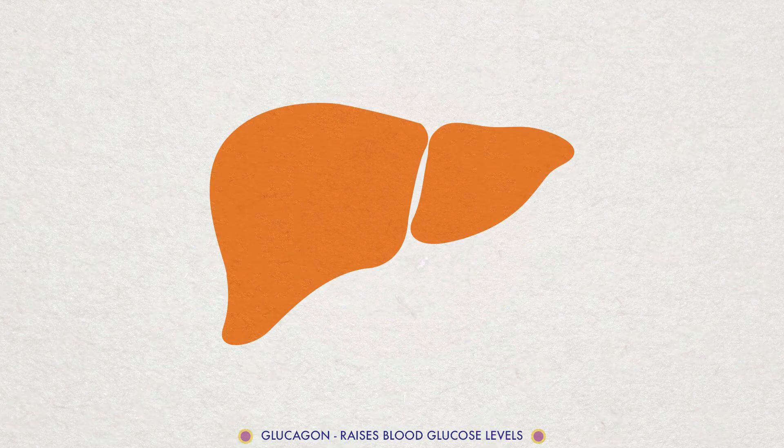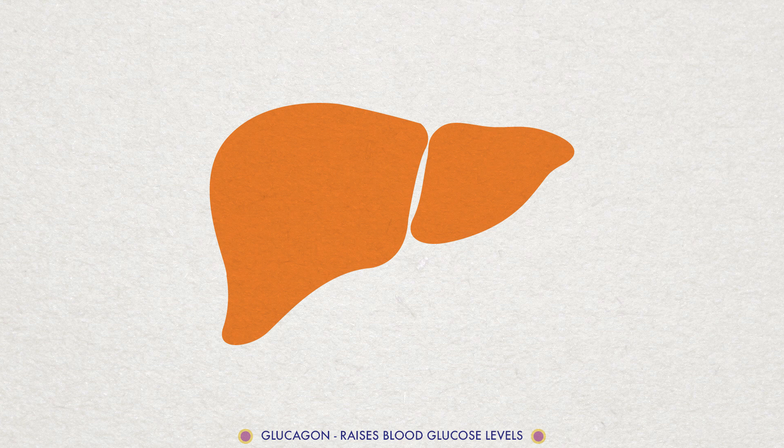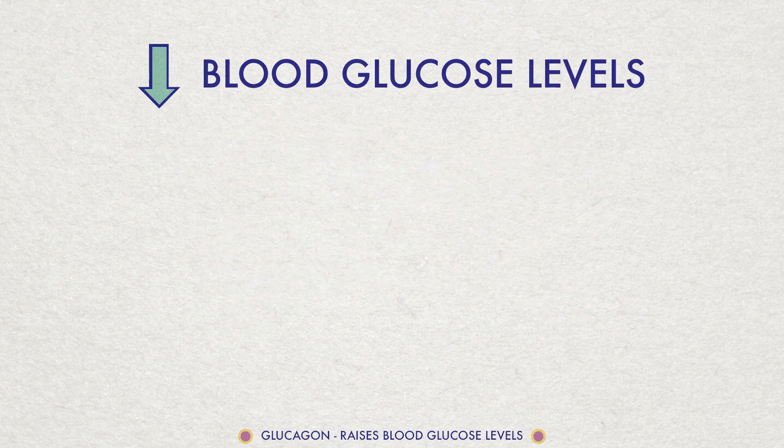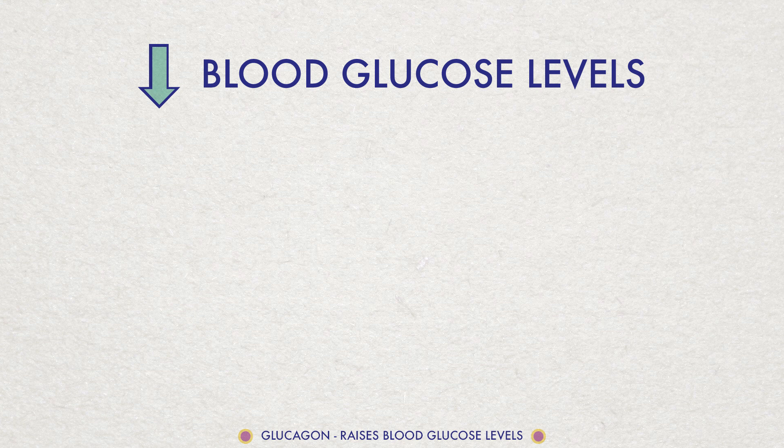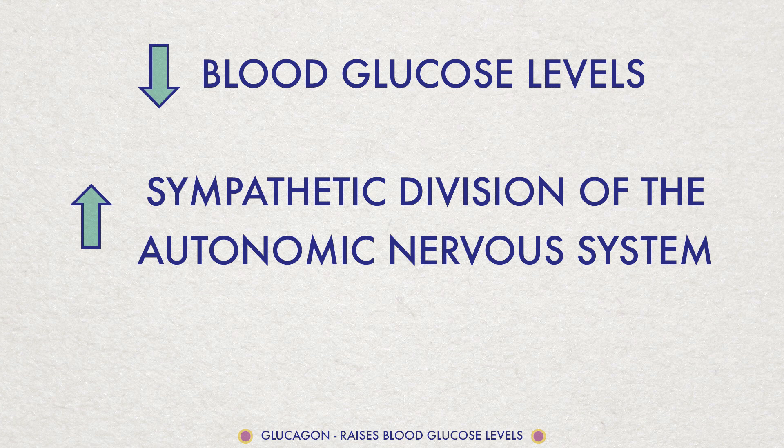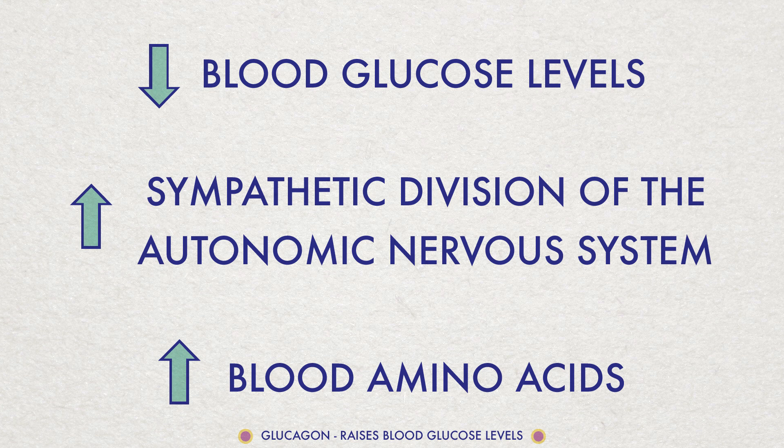Glucagon mainly targets the liver as this is one of the major storage sites for glycogen. Glucagon is stimulated by low blood glucose levels, increased activity of the sympathetic division of the ANS. This can occur during exercise, or a rise in blood amino acids if the blood glucose level is low.